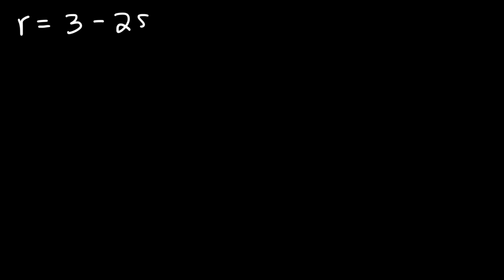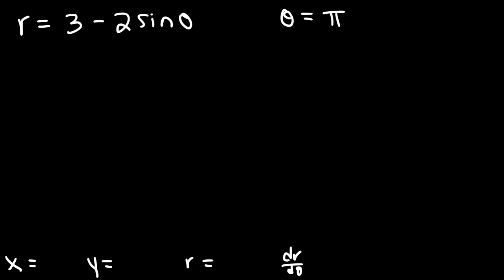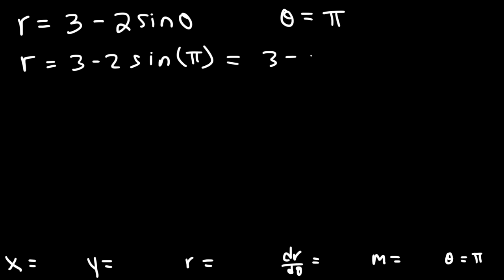Now let's work on another example. Let r = 3 − 2sin(θ), and find the equation of the tangent line when θ = π. I'll calculate r, x, y, dr/dθ, and the slope. Starting with r: r = 3 − 2sin(π), and sin(π) = 0, so r = 3 − 0 = 3.